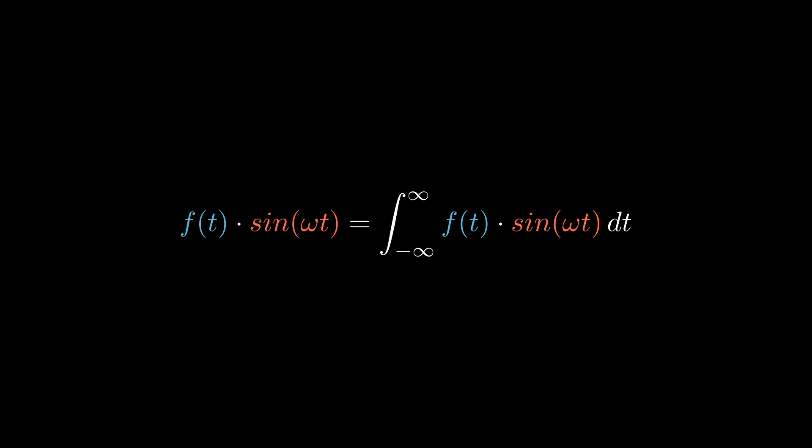We could also do the Fourier cosine transform for even functions. More generally, we can use Euler's formula to combine these two families of basis functions into something that spans the entire function space.